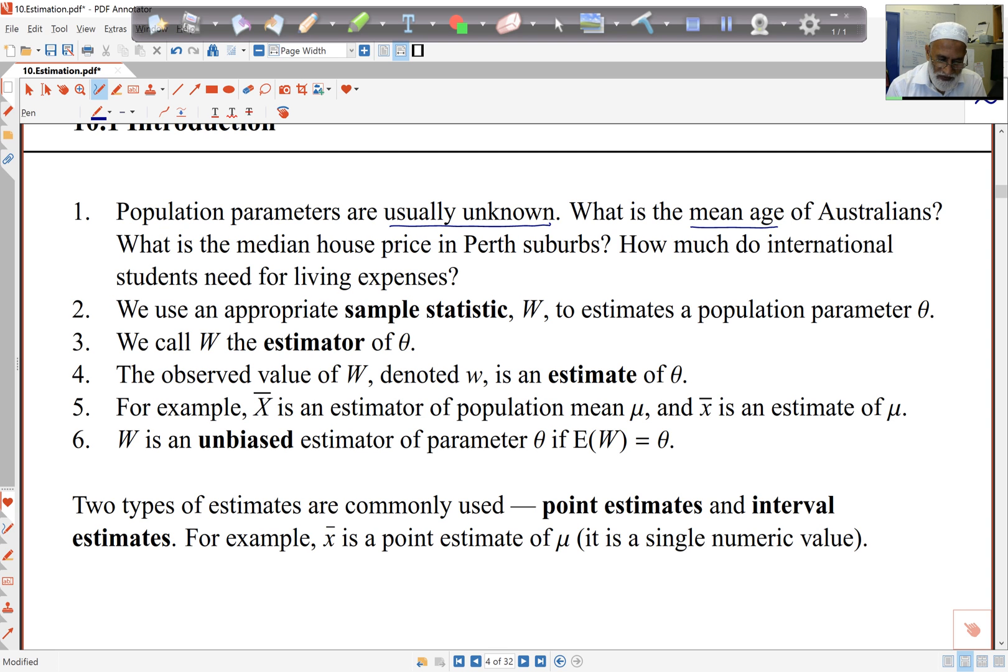What we can do is use some appropriate sample statistic to estimate population parameters. So the sample statistic here we'll call W, and just a general parameter we'll call theta. So we call W the estimator of theta, and the observed value of W - W here is an uppercase letter, which is a random variable.